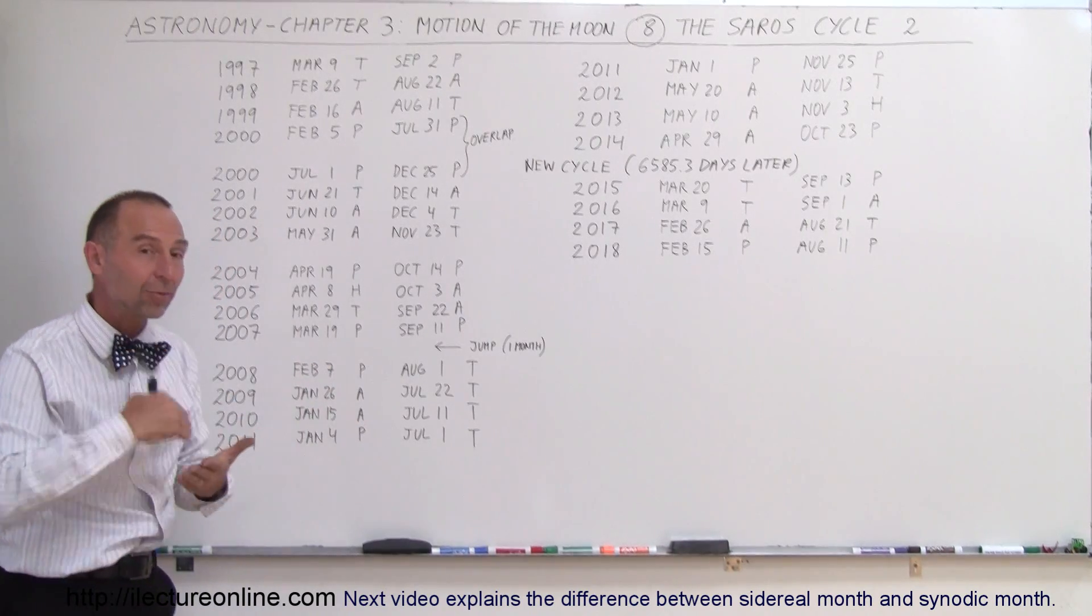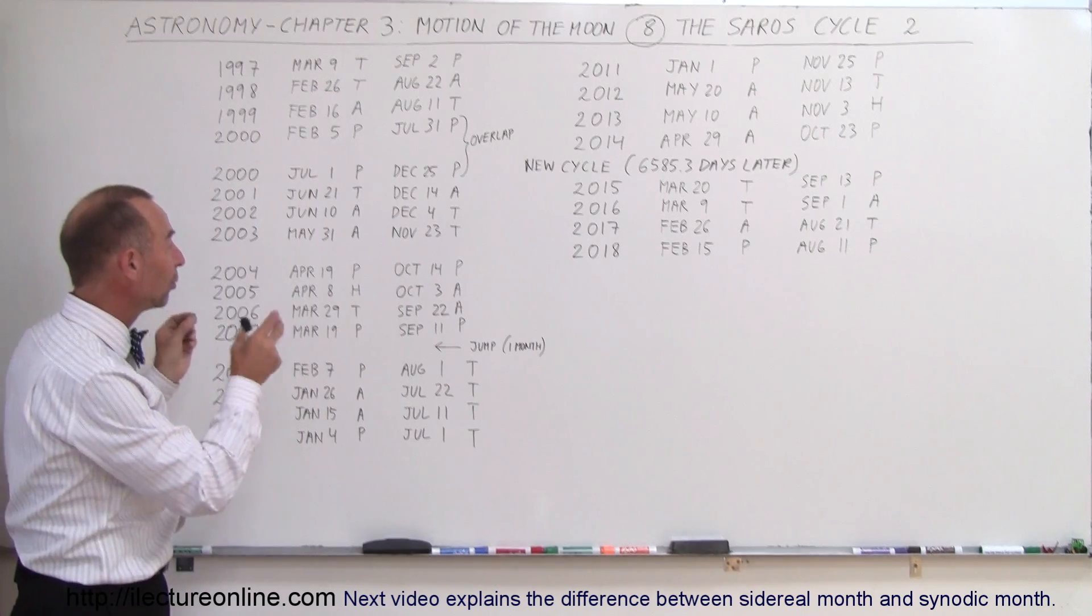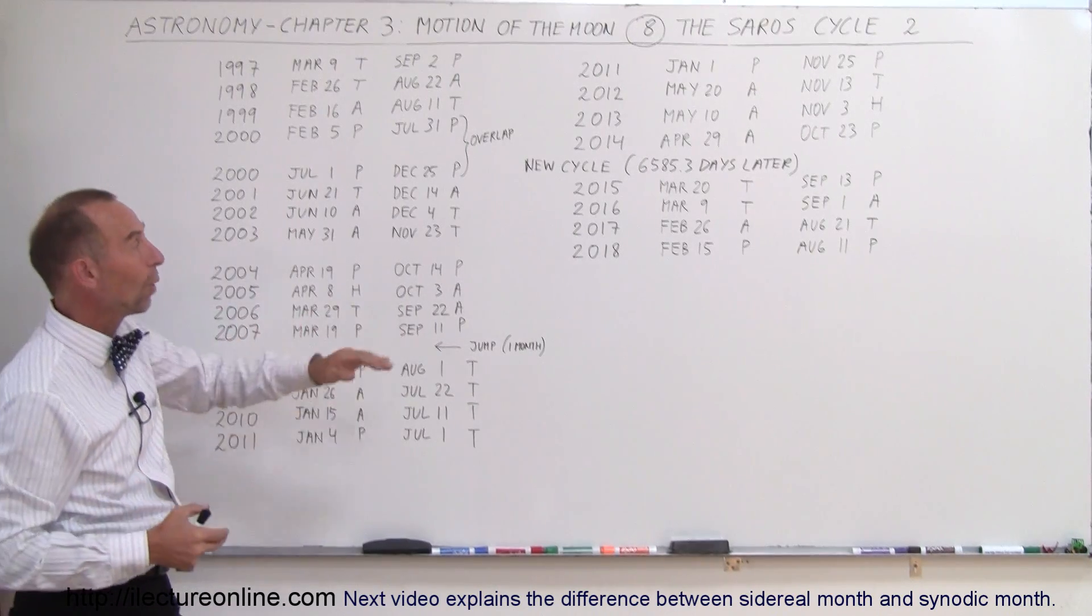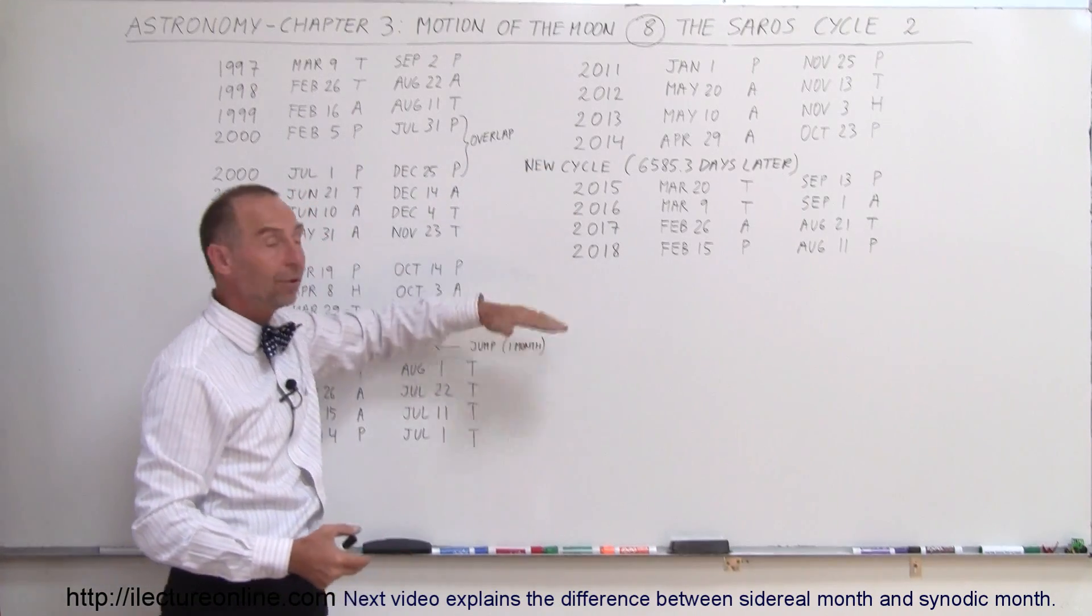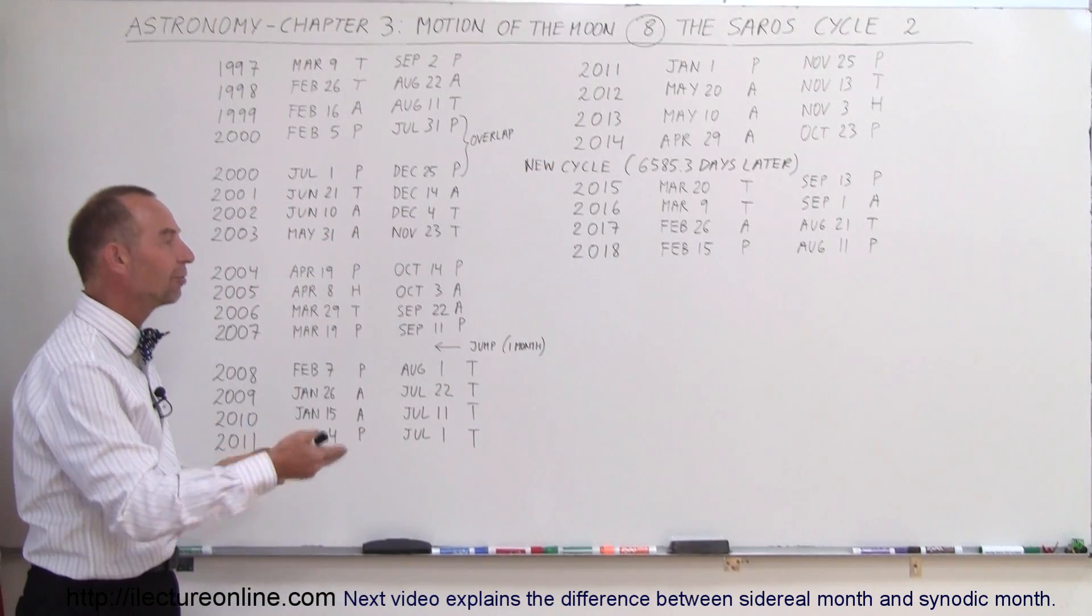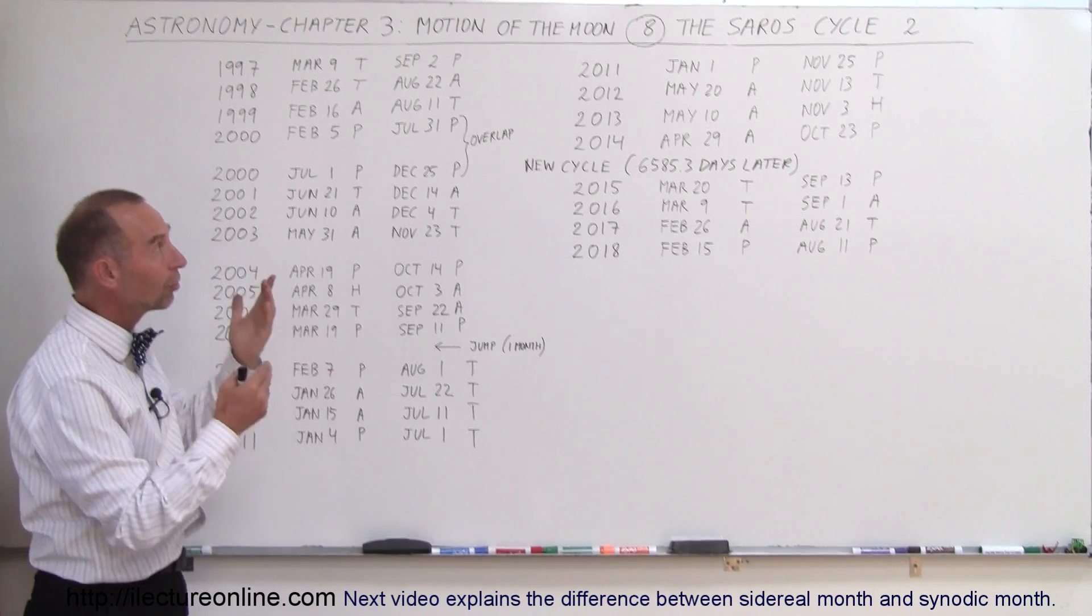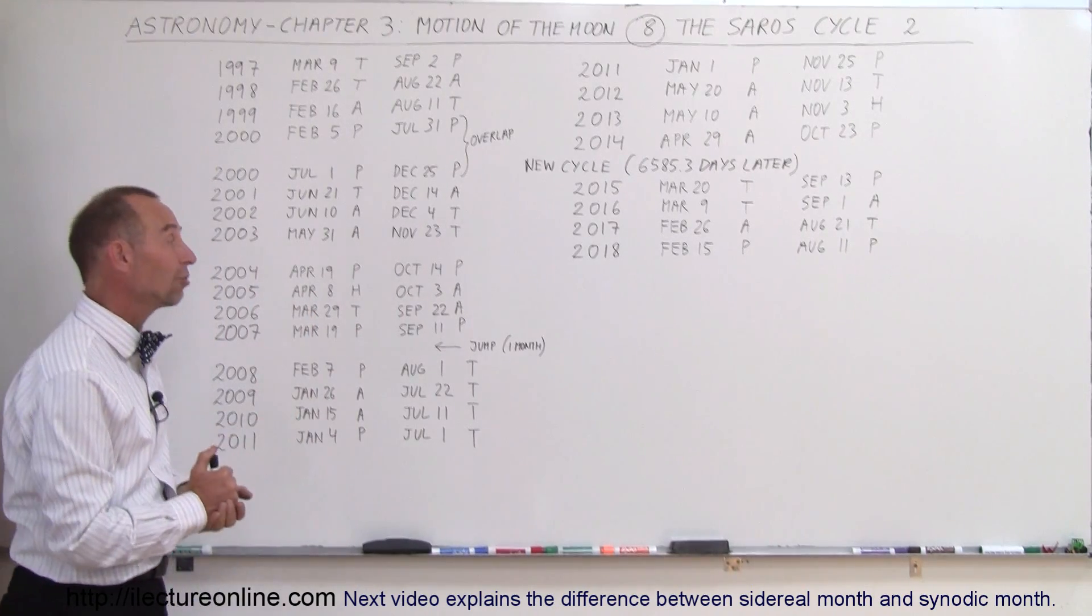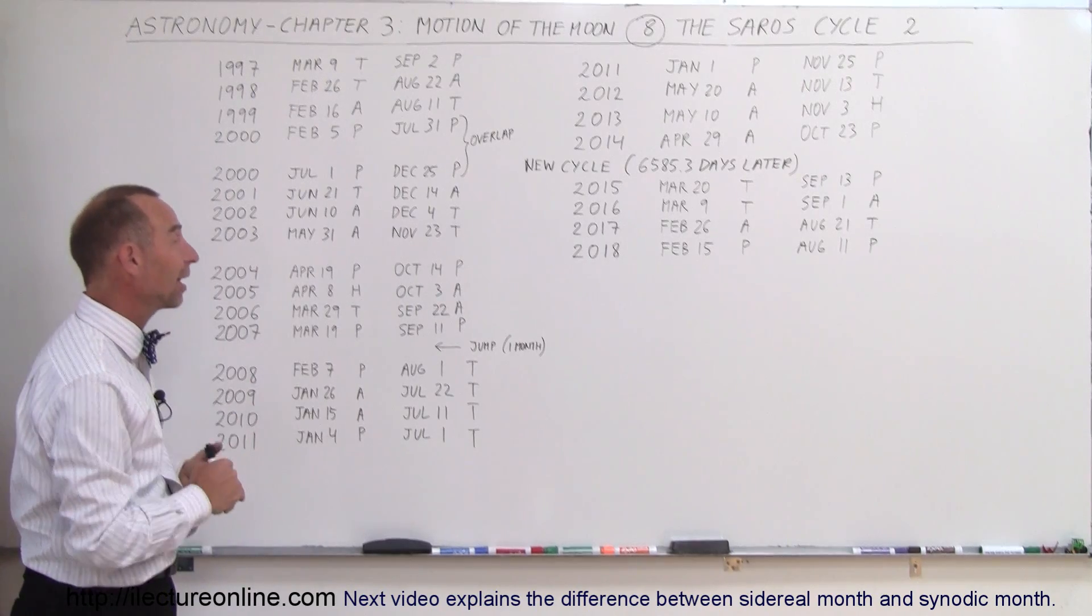Somebody, by taking enough observations, finally noticed that and wrote it all down. And from that, we can now predict in the future when the next solar eclipse is going to happen, based upon the repetitive nature of the cycle of what we call the Saros cycle of the solar eclipses. I thought it was really interesting that someone's actually able to figure that out.